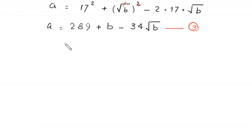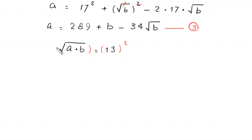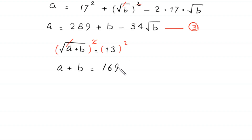Equation 2 is root of (a plus b) is equal to 13. We take the square of both sides, so the square cancels with the square root, and we are left with a plus b is equal to 13 squared, which is 169. Let's call this equation 4.